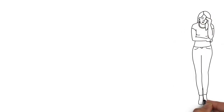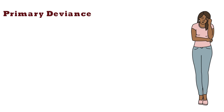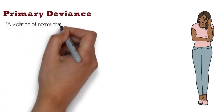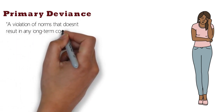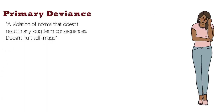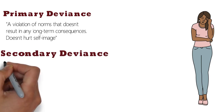There is also something we call primary and secondary deviance. Primary deviance is a violation of norms that does not result in any long-term consequences and does not hurt a person's self-image. If Sarah lives in Iowa and buys marijuana illegally one time without getting caught, she doesn't experience any long-term consequences and her self-image is intact.